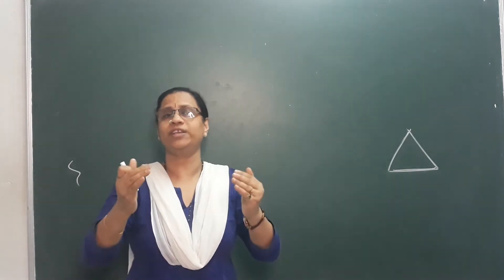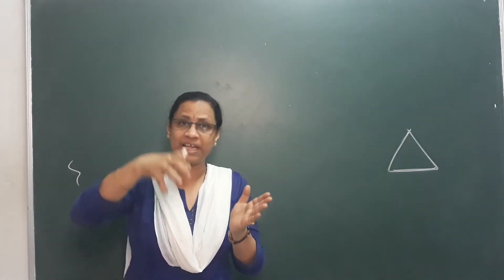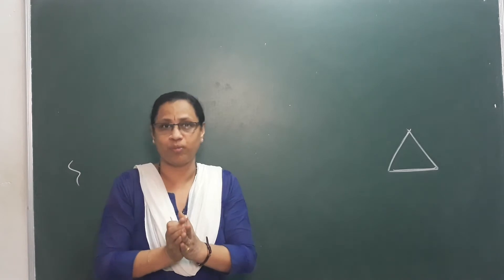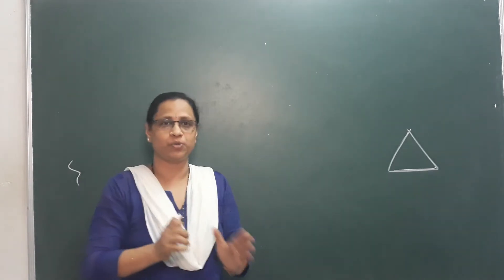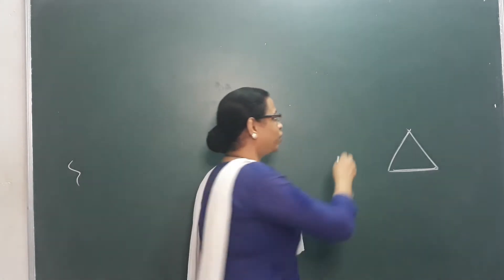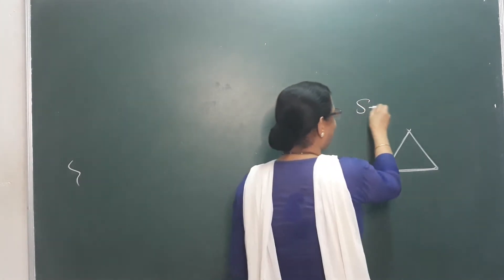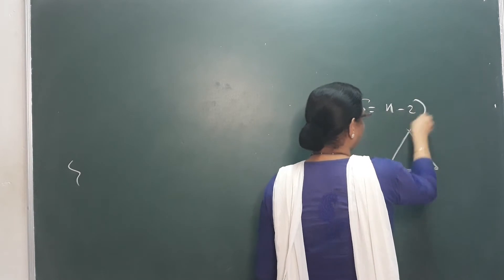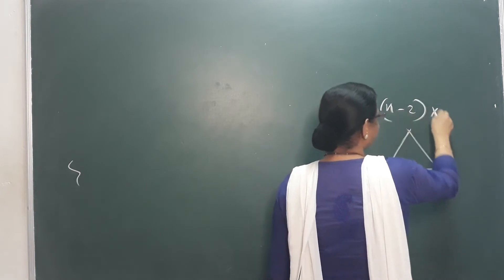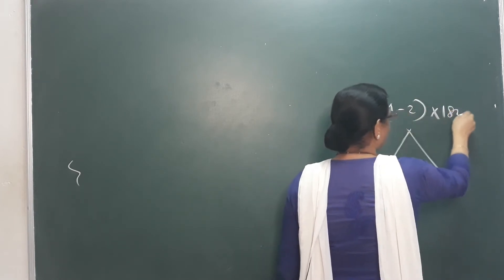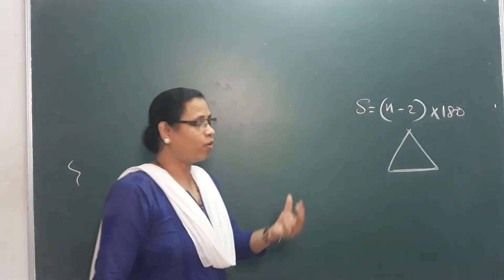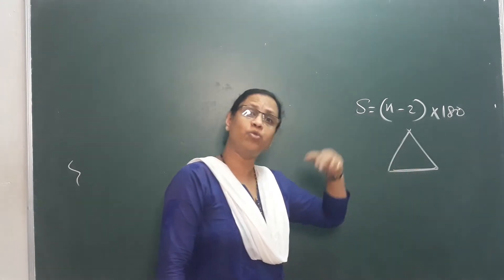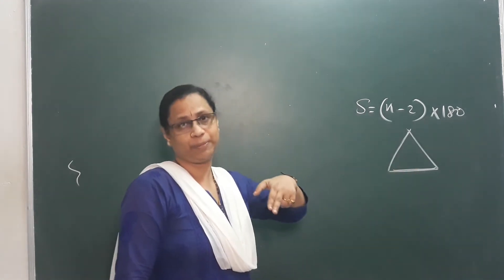This is the inner angle formula. The inner angle formula is (N-2) into 180. That gives us the sum of inner angles of any polygon.